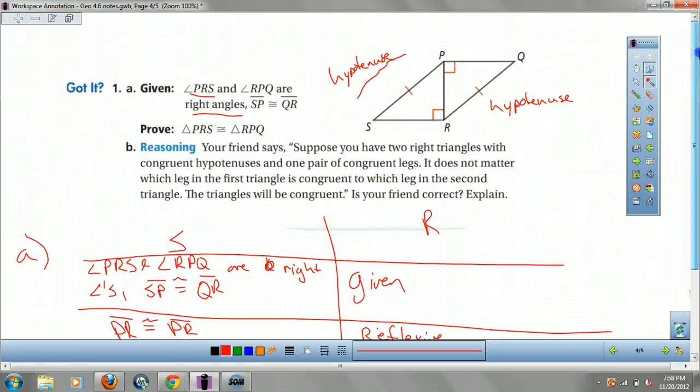Now for B, make sure your friend says, suppose you have two triangles, which congruent to hypotenuses and one pair of congruent legs. It doesn't matter which leg of the first triangle is congruent to which leg of the second triangle. The triangles will be congruent. Is your friend correct? Well, I wouldn't keep friends lying about math, but because he's correct. Yes.